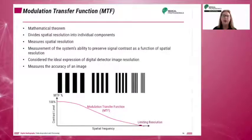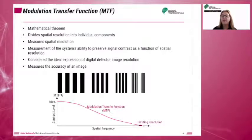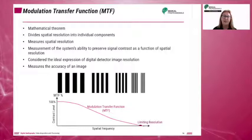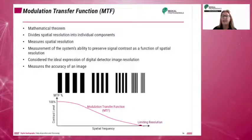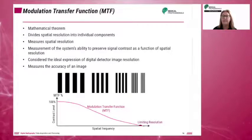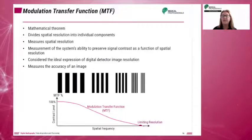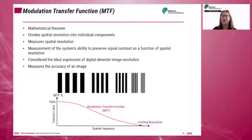According to Carlton and Adler, MTF measures the accuracy of an object compared to the original object on a scale of 0 to 1. A perfect image would have a value of 1. Higher MTF values at high spatial frequency are a key specification in digital detector design.